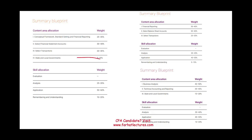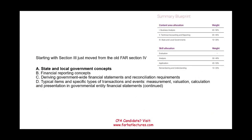Section four — governmental accounting — is gone from the core. Now let's talk about BAR, the advanced topics. BAR has three sections: business analysis, technical accounting and reporting, and state and local government. The state and local government section is simply the old section four from FAR — now it's section three in BAR with basically the same topics.